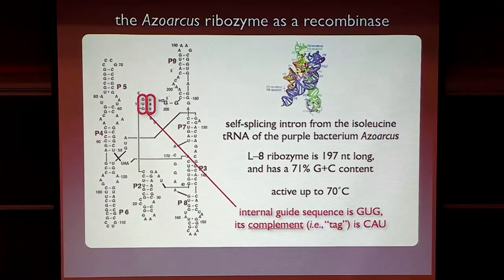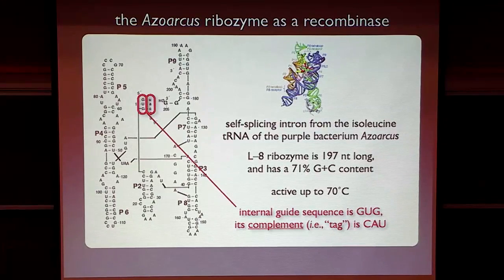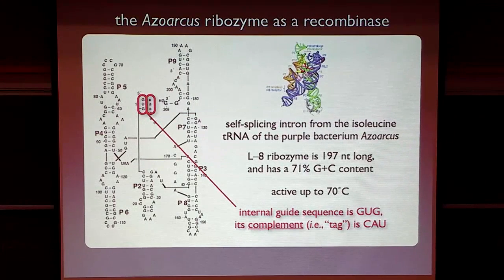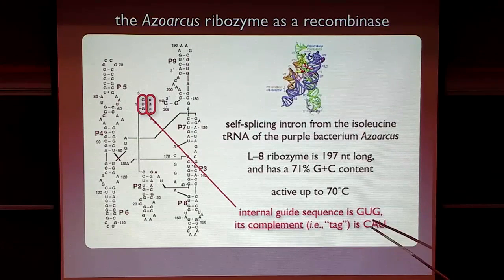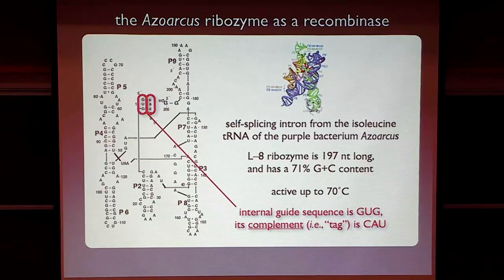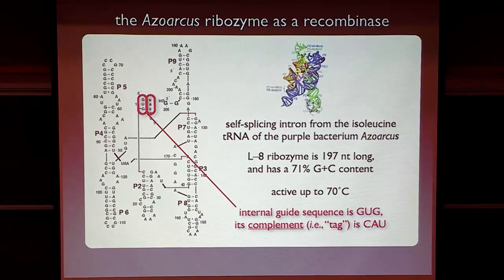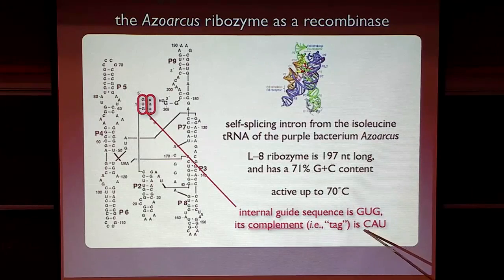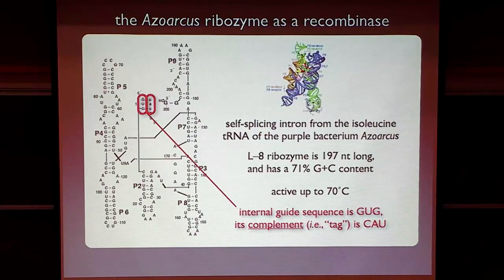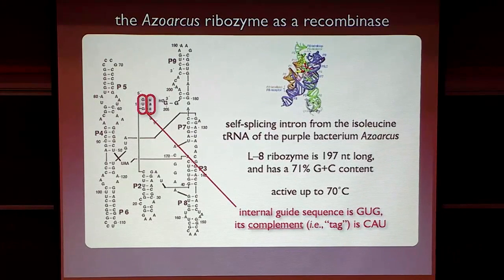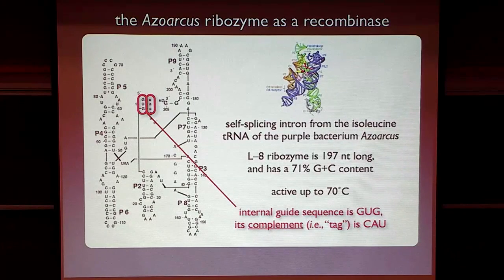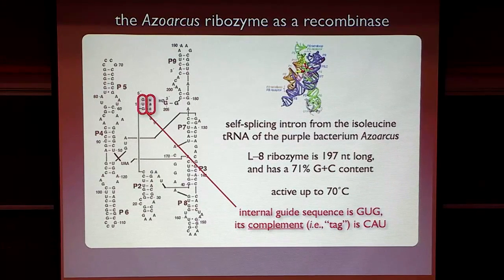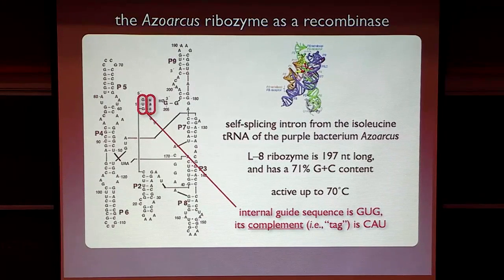So, in the wild-type azoarchus ribozyme, its IGS is GUG. It's very kind of important to remember that, GUG. And GUG is like a heat-seeking missile. It goes out and targets triplets that have its conjugate, CAU, which I'll call the tag. And anywhere it finds that tag, it will carry out this sequence of splicing reactions.